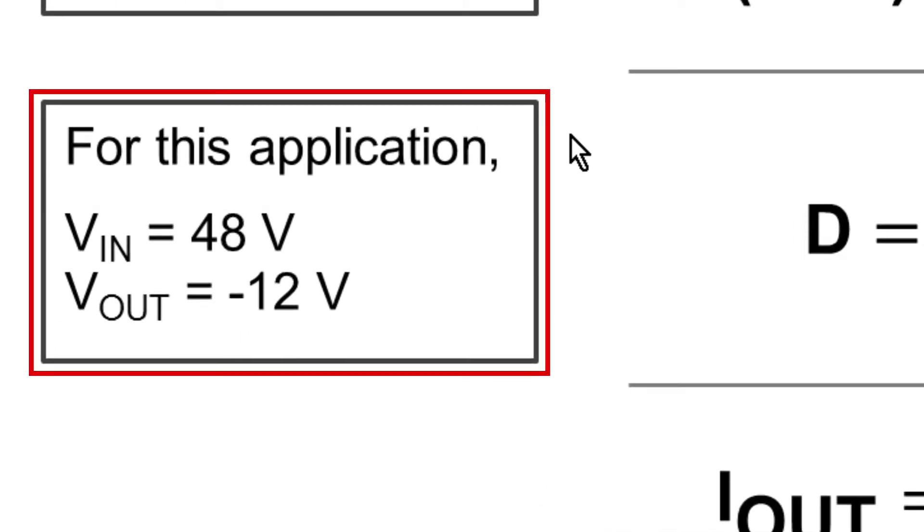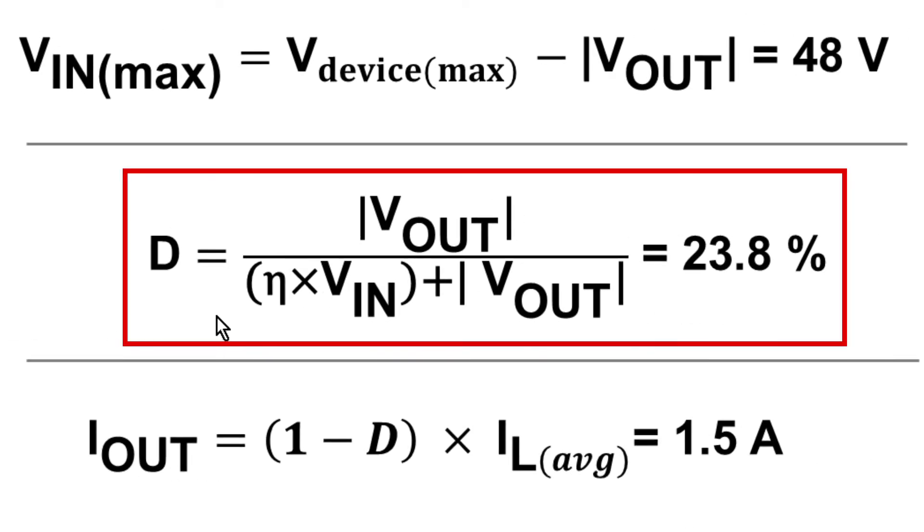For this design, we know we're going to use 48 volts as our input and we want negative 12 as our output. The duty cycle can be calculated using this equation to get to 23.8%.